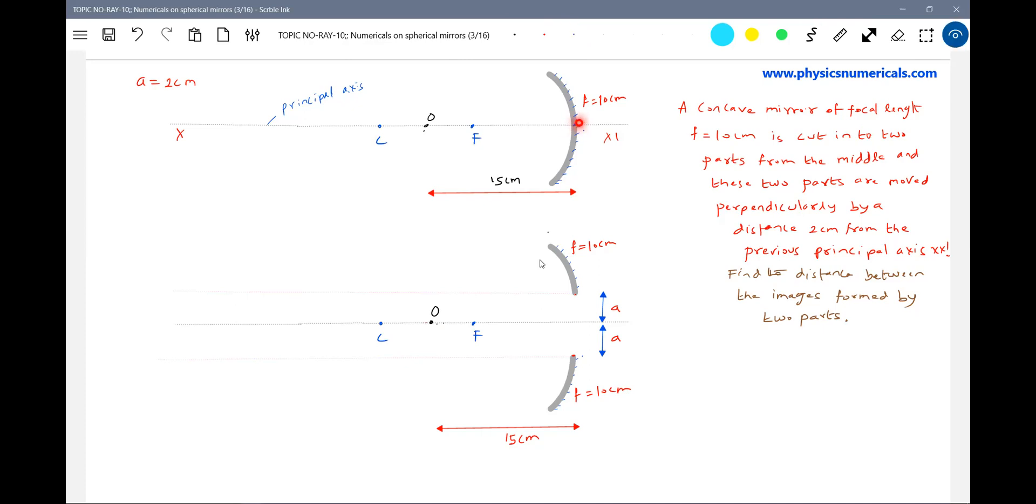I'm going to take this upper part and shift it here. I'll cut it then move it. Similarly, I'll cut this then move it, and they're shifted by distance. Now the object is no longer on the axis. This is not the principal axis - this will be axis one, axis two. I'll call this mirror two and this mirror one.